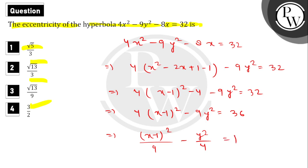From this standard form, the center is at (1,0). The values are a² = 9 and b² = 4. This implies a² = 9 and b² = 4.